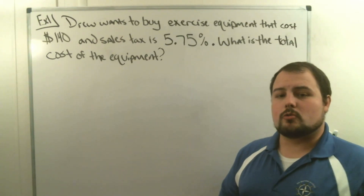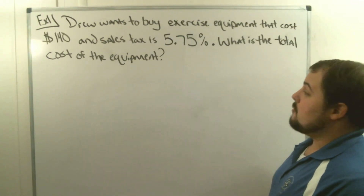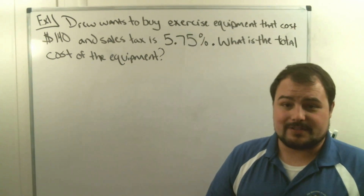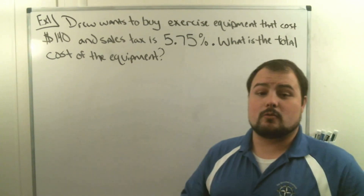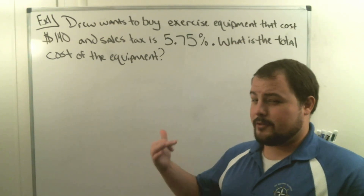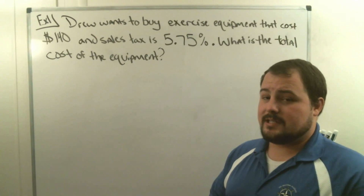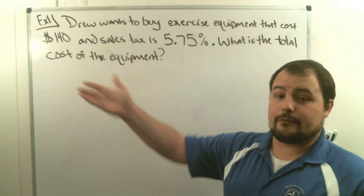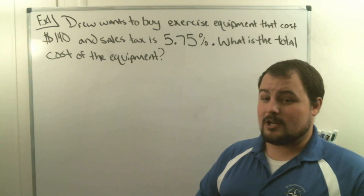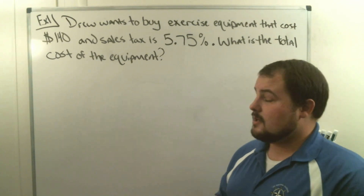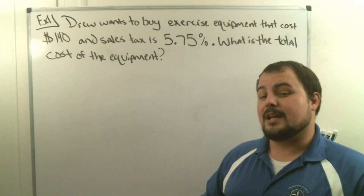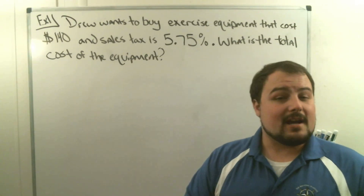In example one, we're solving this word problem: Drew wants to buy exercise equipment that costs $140. There's a sales tax of 5.75%. What is the total cost of the equipment? We're going to figure out what that price is. We know we're paying $140, which equals 100% of the cost. Our job is to figure out what 5.75% of tax is going to be and add that to the total, because tax is something additional to the cost you're paying.